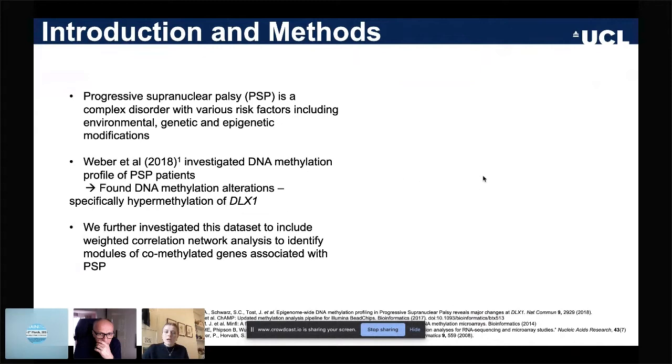DNA methylation is one of the most studied epigenetic modifications and very simply involves the addition of a methyl group to DNA, which leads to changes in expression of target genes. Aberrant DNA methylation is implicated in a large number of diseases including neurodegenerative diseases.